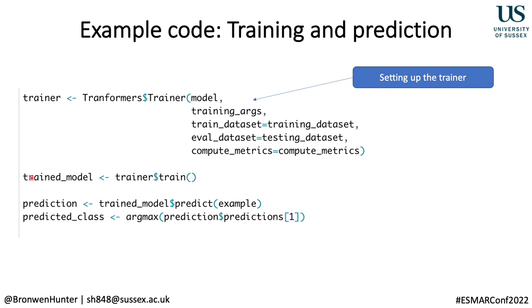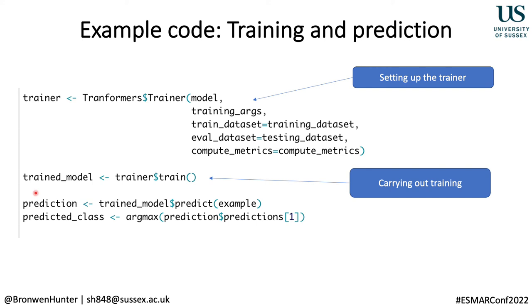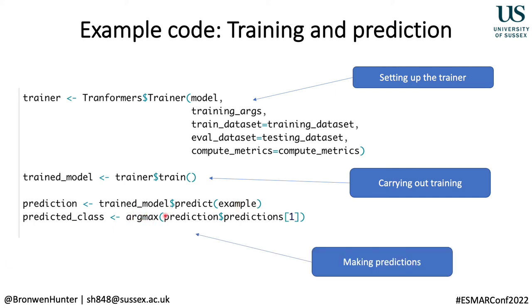We then create the trained model by calling trainer$train, and once that model is trained, we can use it to generate predictions. By using the predict function, we get a prediction for each of the classes, and then by using the argmax function, we get the class with the highest probability. Hopefully you can see that by just using a few lines of code, we can train a really high-performance model for text classification.